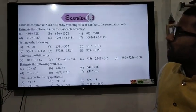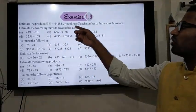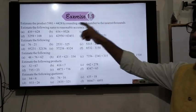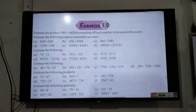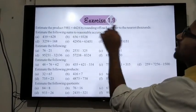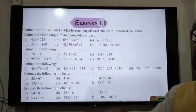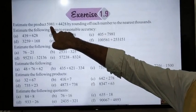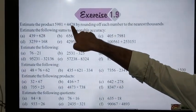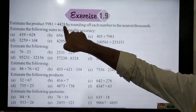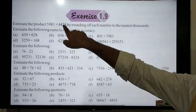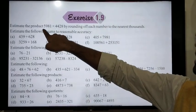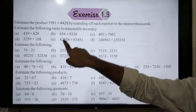Exercise 1.9: Estimate the product by rounding off each number to the nearest thousand. 5,981 rounds to 6,000, and 4,428, since hundreds place is 4, rounds to 4,000. So 6,000 into 4,000.